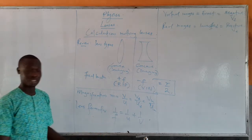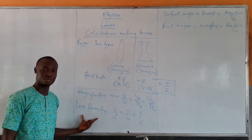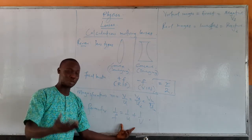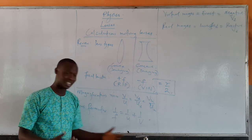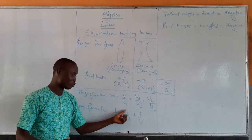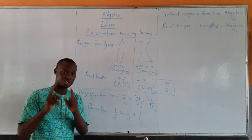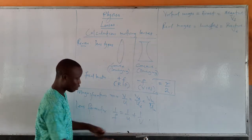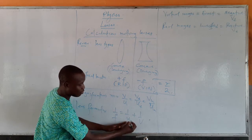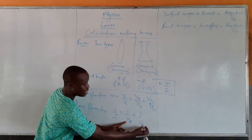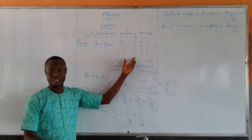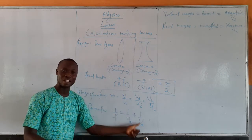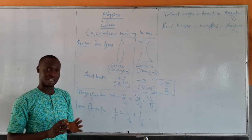Another very important concept is the lens formula, which looks just like the mirror formula. The lens formula is 1 over F equals 1 over U plus 1 over V. One important thing to note is that this formula only takes distances — U and V are simply distances from the lens. This formula cannot use object height or image height; it only takes distances.